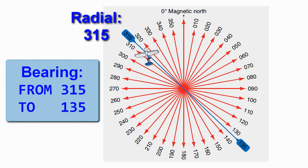We are flying over here. If we turn our bearing selector to 315, the needle will be vertical. If we tune it to 135, the needle would also be vertical. The only difference is the To or From indicator. If we are on 315 it will show From; if we are on 135 it will show To.